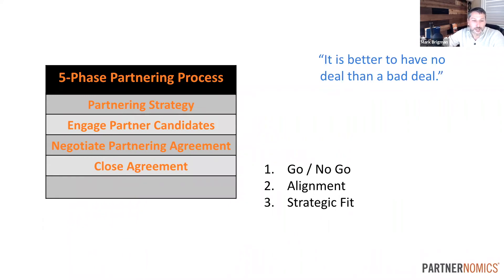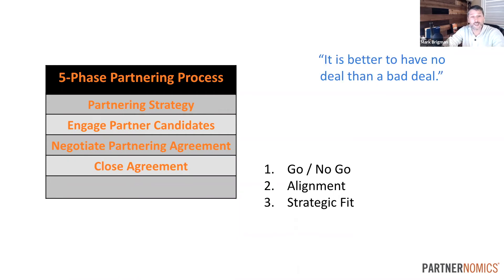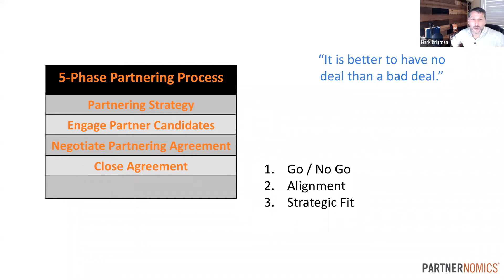We've got to make sure that we put smart deals in place. Phase four: close the agreement — this is the go/no-go. We've got to be honest with ourselves: do we think this is a good deal, good relationship? Is it going to work long-term? Is it going to meet what we want it to meet for our organization? A deal that works for one party works for zero parties — it has to work for both.